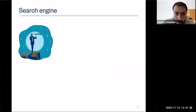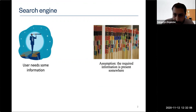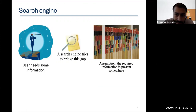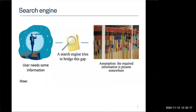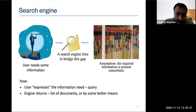What a search engine does: suppose a user needs some information, and the assumption is that the required information is present somewhere digitally — written somewhere on the web or in some document collection. The search engine tries to bridge this gap. Typically, the user expresses the information need in terms of a query, and the engine returns a list of documents.